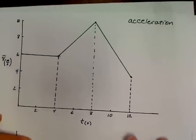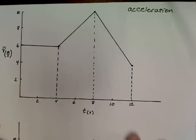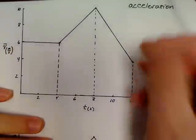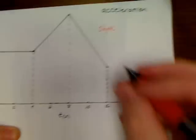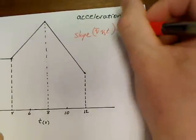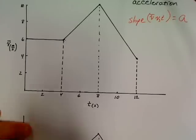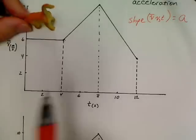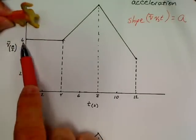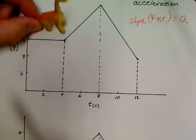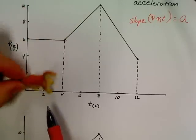Let's get out another set of graphs and look at objects undergoing acceleration. Here is a velocity versus time graph. The slope of a velocity versus time graph is acceleration — any slope on this graph is going to be acceleration. This problem starts with the dinosaur not at position 6, but running at 6 meters per second. He runs at a constant speed of 6 meters per second for the first 4 seconds.